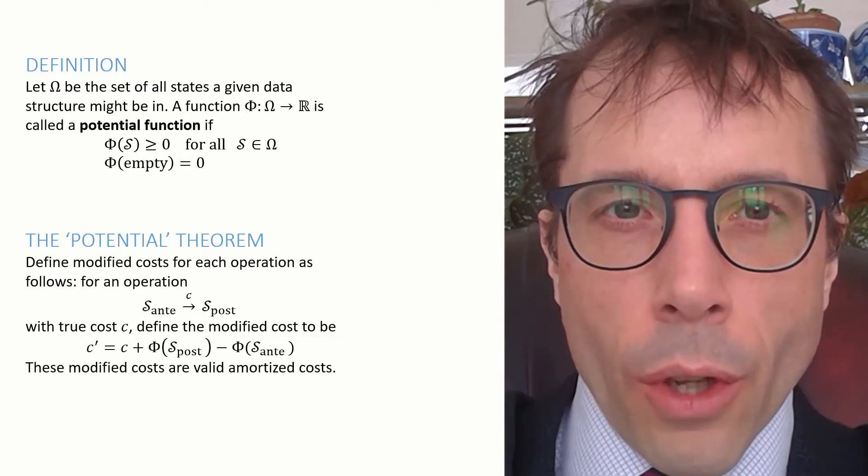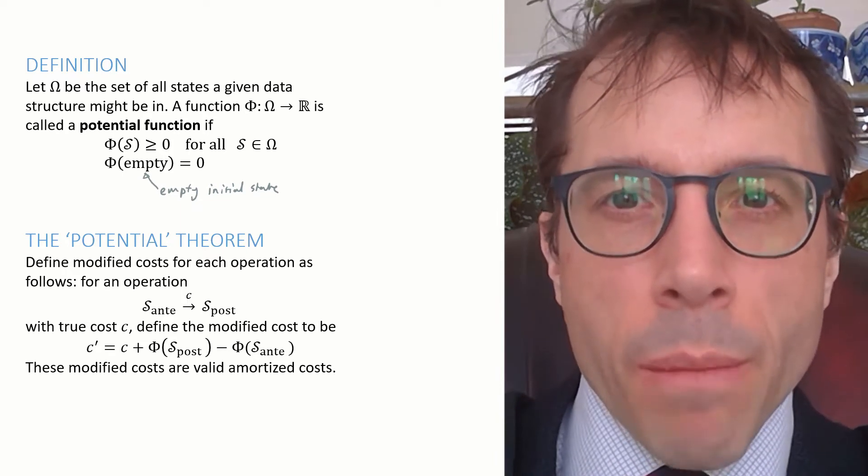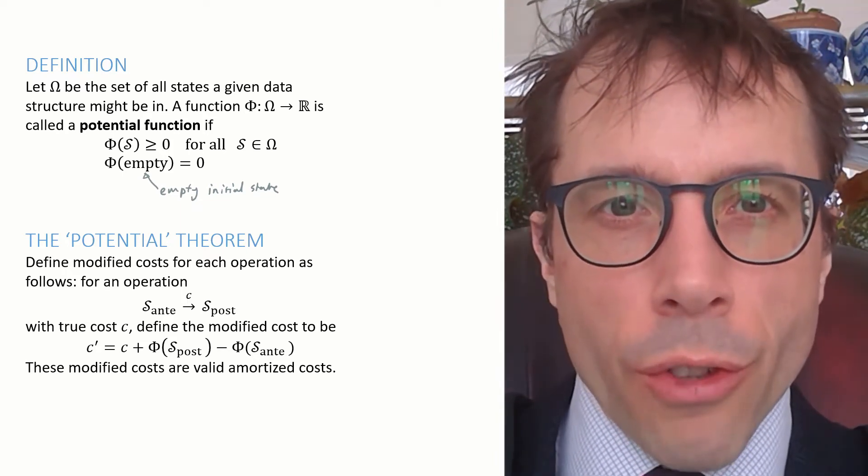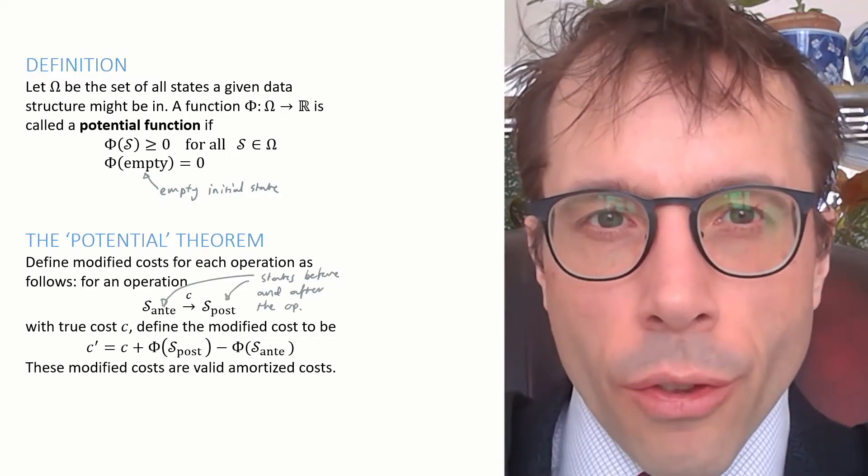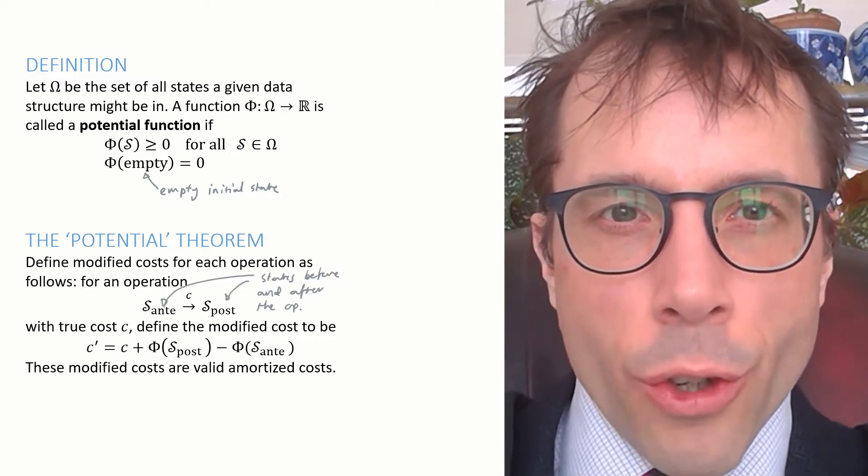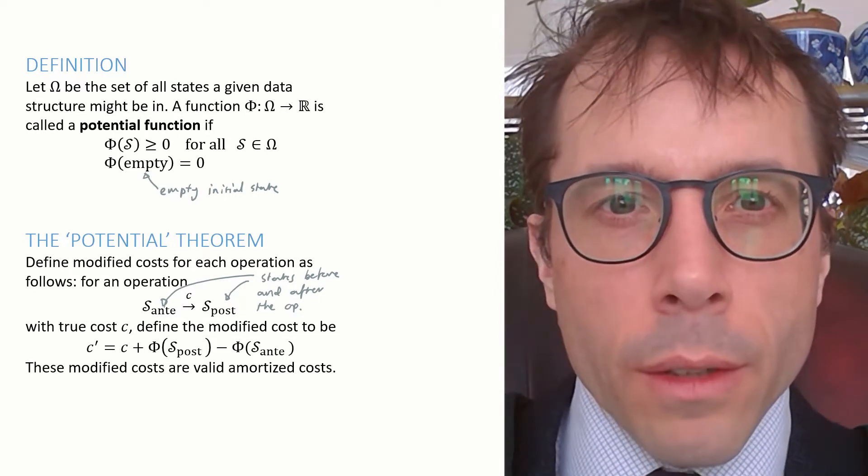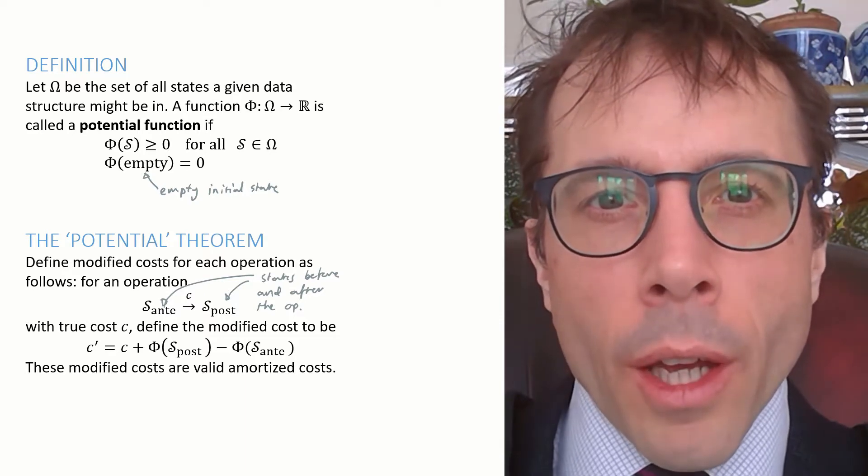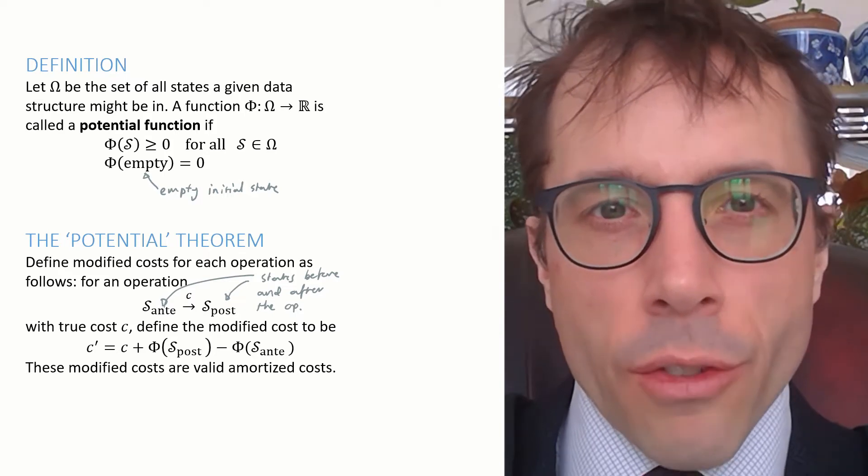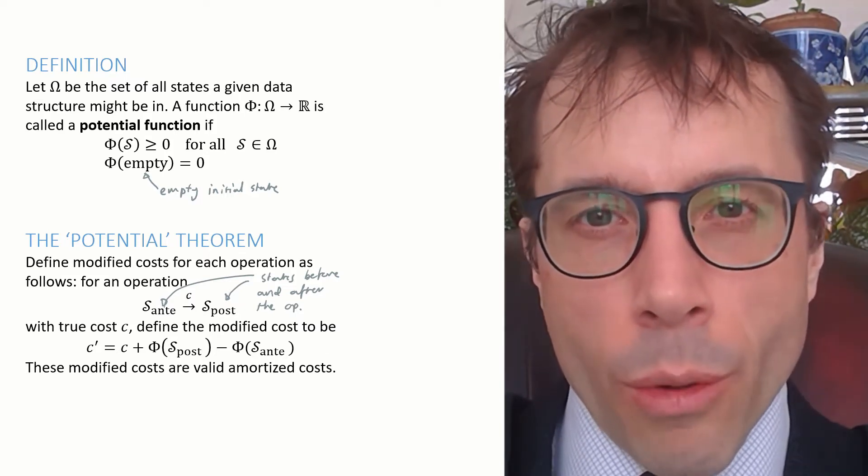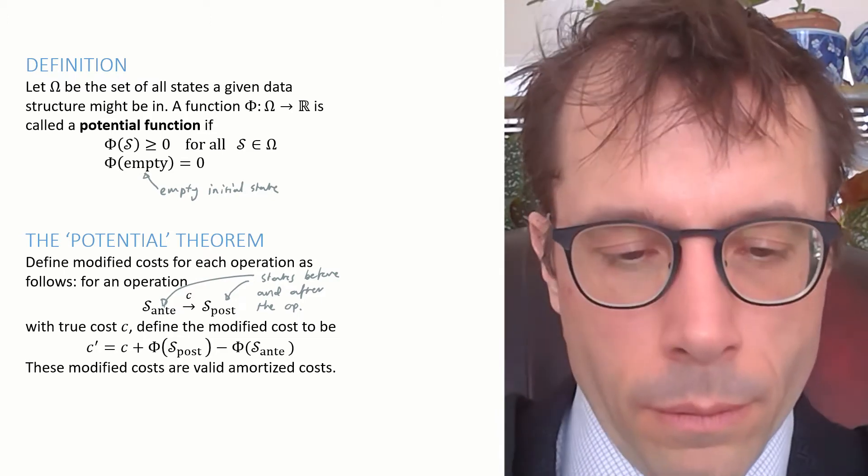First, a quick note about the definition. It says that phi of empty equals zero. Here, empty refers to the data structure's initial empty state. Second, this theorem has this funny notation S sub-ante goes to S sub-post, with the superscript C. All I mean by this is, consider an operation on the data structure where the state beforehand was S-ante and the state afterwards is S-post, and the cost, i.e. the running time of this operation, is C.